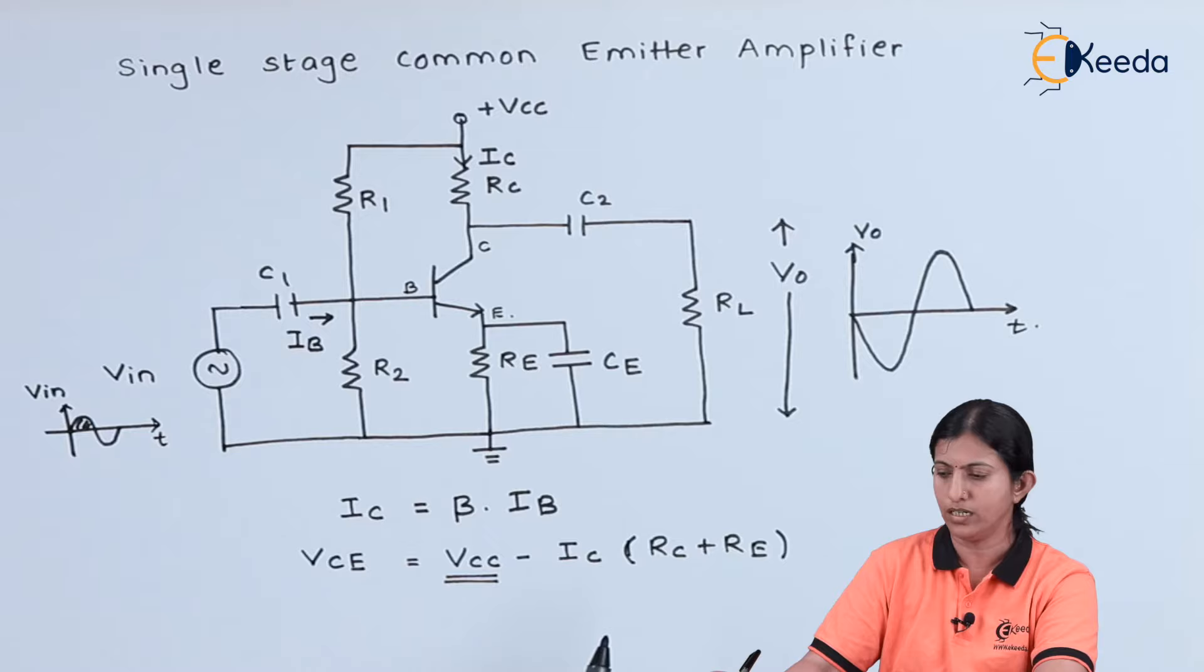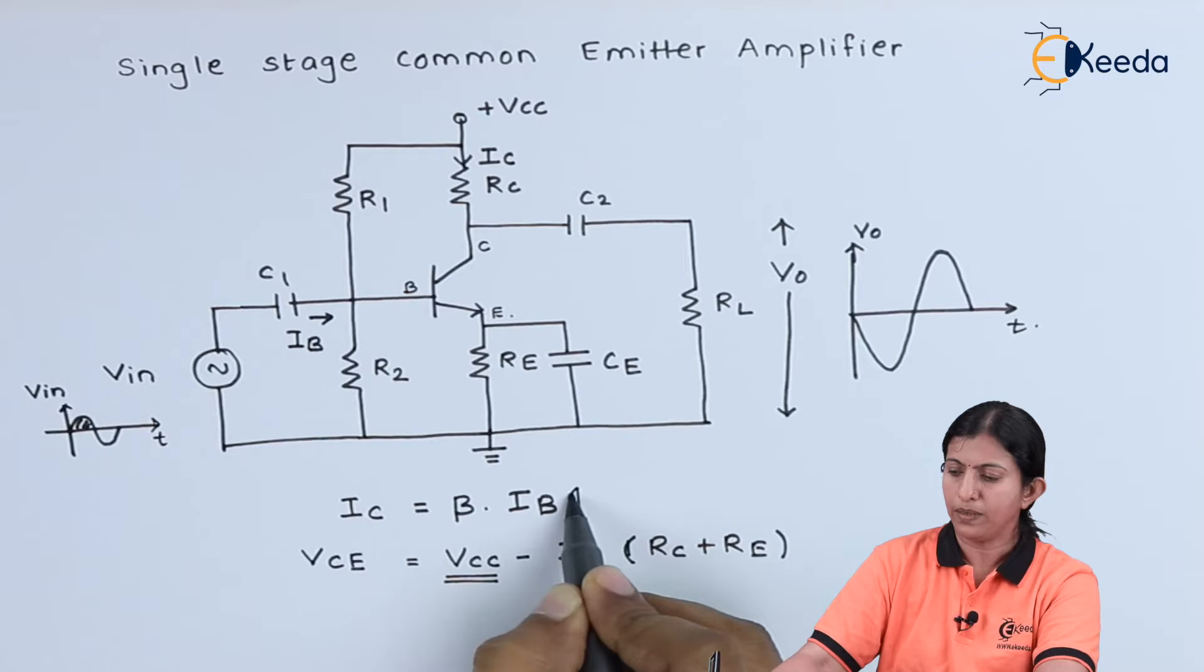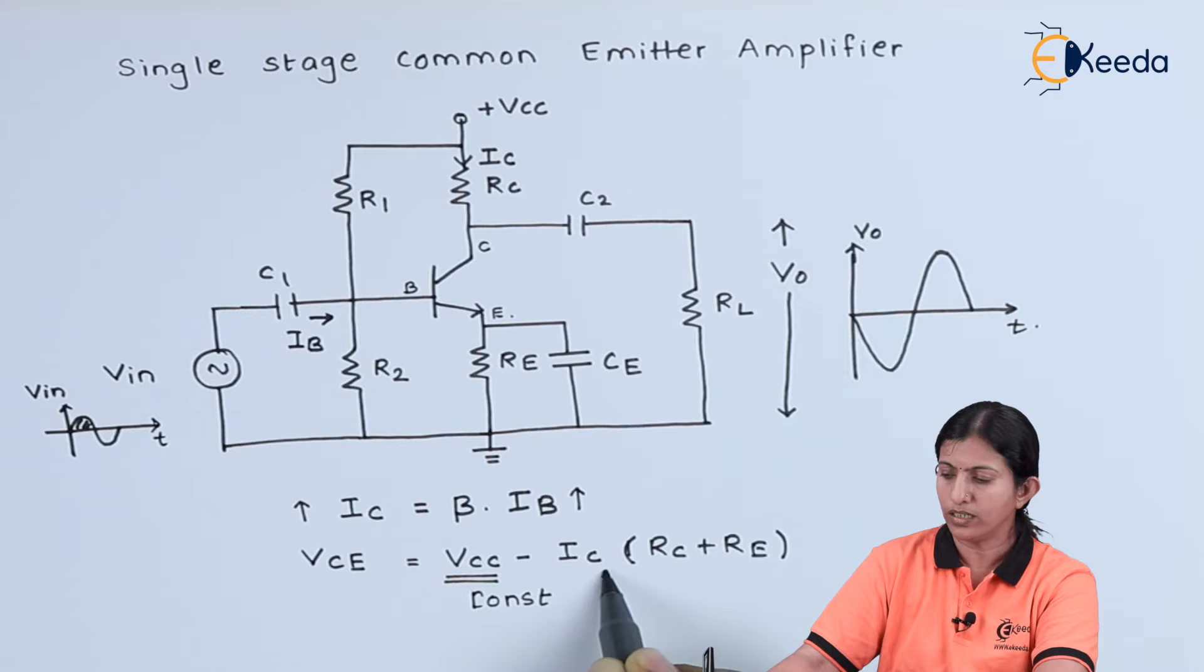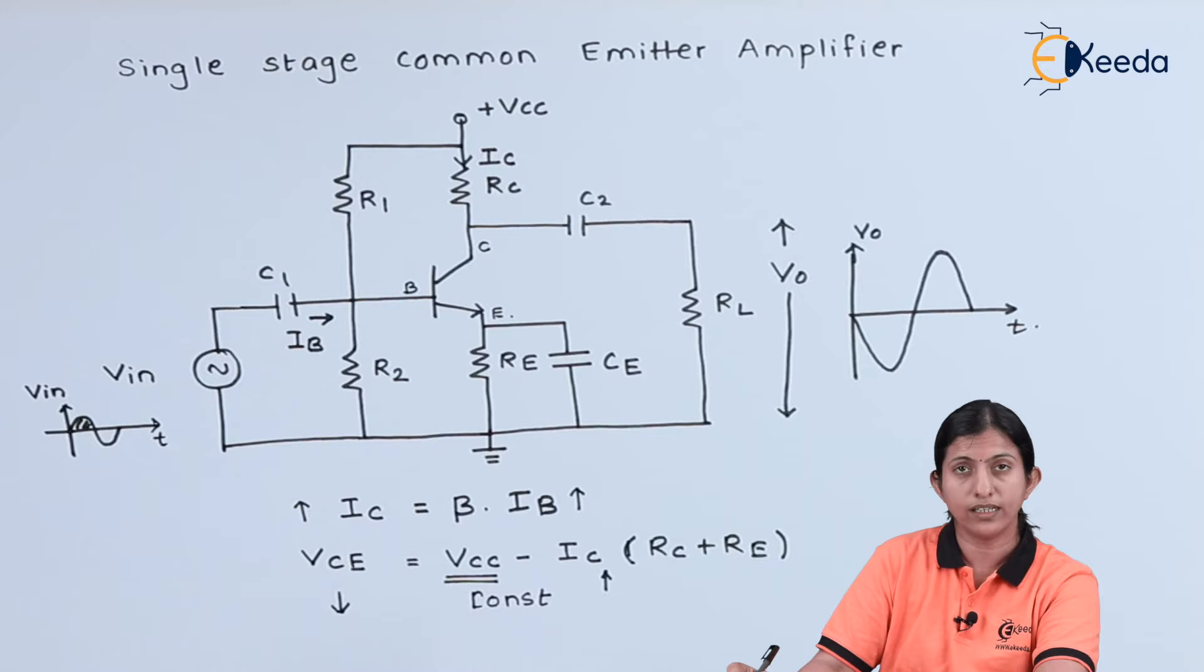As you know, this is the supply voltage which is always constant, and at least for this circuit diagram we are considering the supply voltage as a constant value. During the positive half cycle when IB increases, the value of IC also increases. And as this parameter is constant, if this value increases, then its difference, that is VCE voltage, decreases at the output.